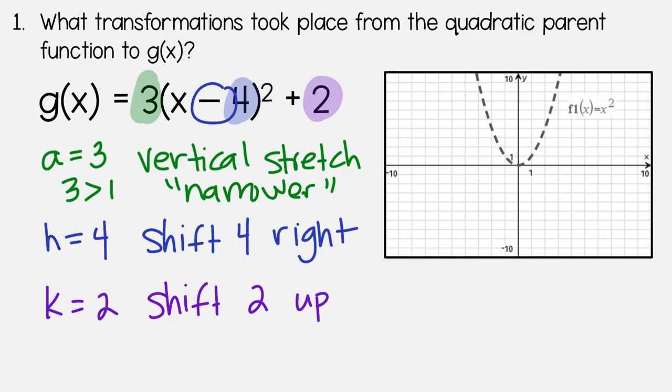So looking at the parent function there, I'm going to try to draw my best estimation of what this would look like. I always do the shifting first. So starting from the vertex, we're going to shift 4 to the right. 1, 2, 3, 4. And then shift 2 up. 1, 2. So that is where our new vertex should be. I'm going to go ahead and draw a dot there. And then it should be narrower than what the parent function is. It should look skinnier. So I would say kind of like that.